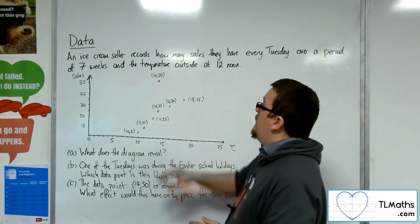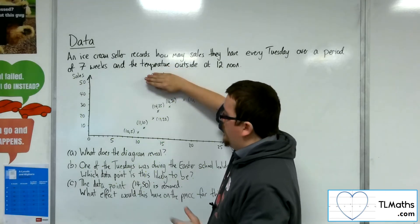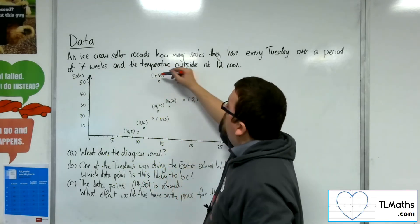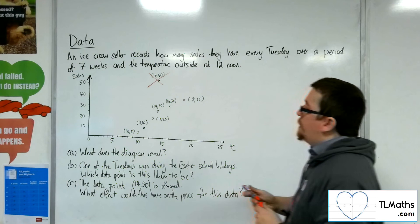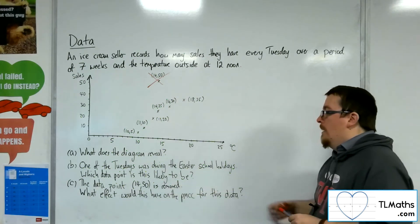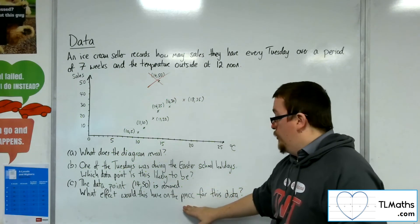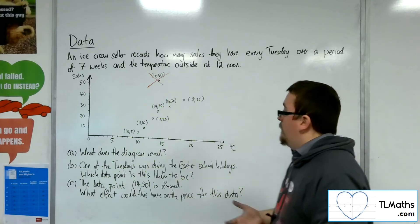Now, if that data point is then removed, okay, so if we remove that data point, then what effect would this have on the product moment correlation coefficient for this data? So the value of R.